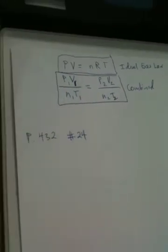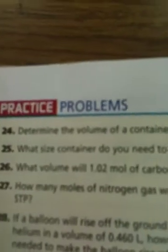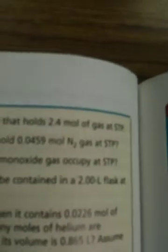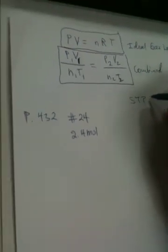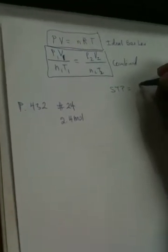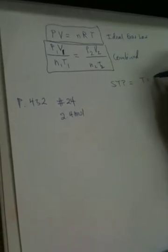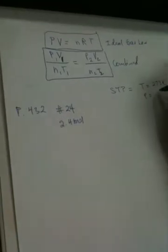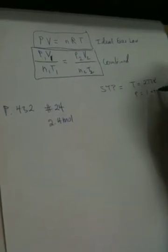Good. Now, in number 24, we are asked to find, or we're given 2.4 moles, but we don't know what to do with STP yet. With STP, the temperature is going to be equal to what? 273 Kelvin. And what's the pressure going to be? 1 ATM.